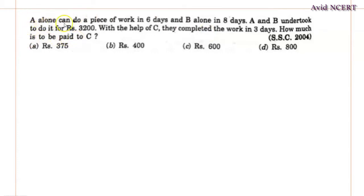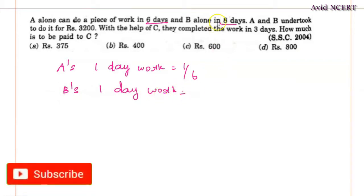So from the first sentence, A alone can do a piece of work in 6 days, which means A's 1 day work will be equal to inverse of this, which is 1/6. Second sentence, B's 1 day work is inverse of this. B's 1 day work equals inverse of 8 days, which is 1/8.